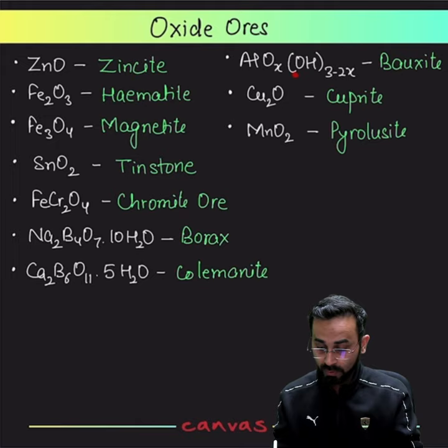AlOx(OH)3-2x Bauxite — this is the MCRD formula, normally it is Al2O3·xH2O. Cu2O Cuprite, MnO2 Pyrolusite. Keep sharing, thank you.